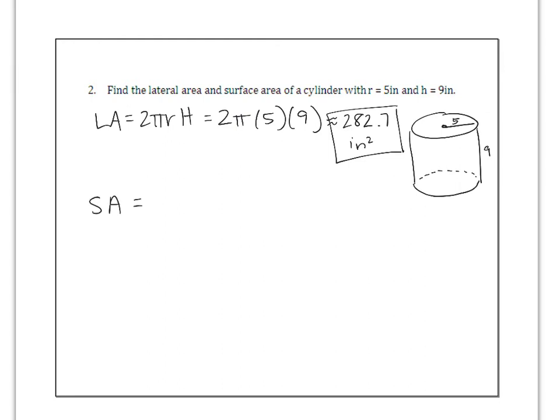And surface area is 2πrh plus 2πr². So the 2πrh, we just did that. That was 282.7. And now I'm going to add 2π(5)². And you're going to type it in. And it's 439.8 inches squared.